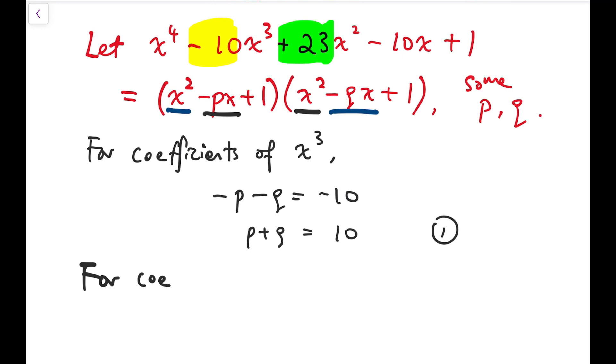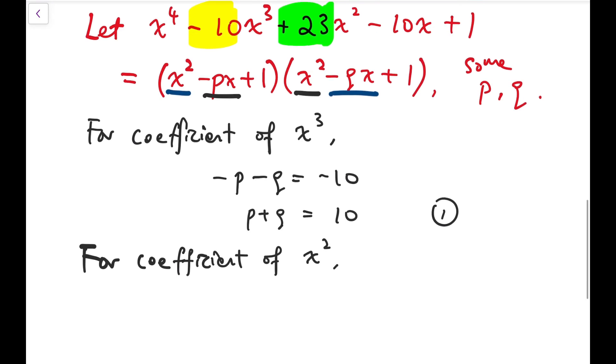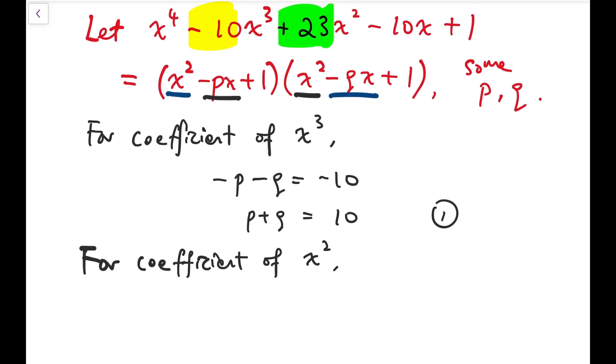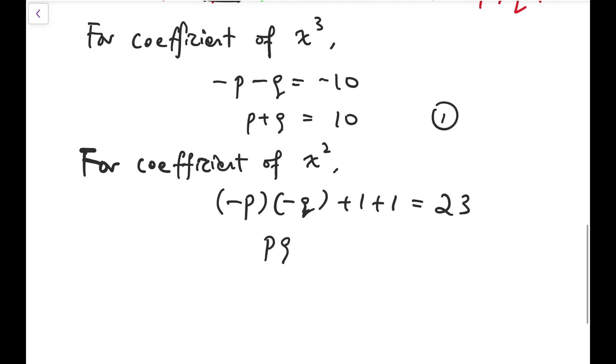We can do similar things on x squared. x squared can be produced by multiplying the ones with x squared, or multiplying the middle terms minus p and minus q. So minus p times minus q plus 1 plus 1 equals 23, and simplifying, we have that pq plus 2 equals 23, and pq equals 21.